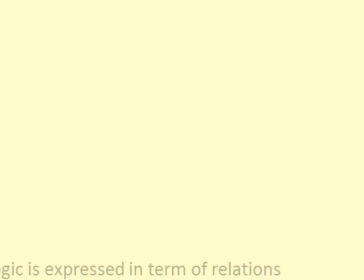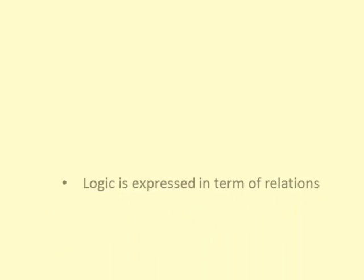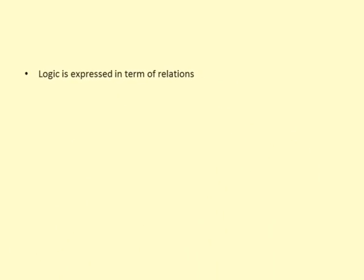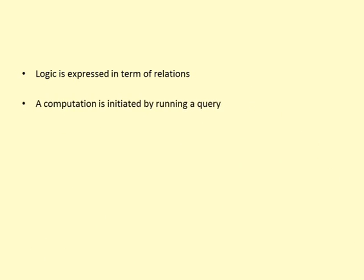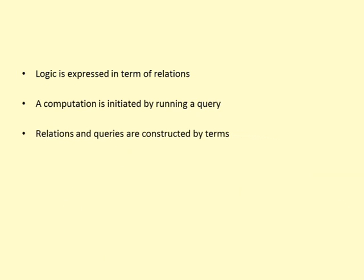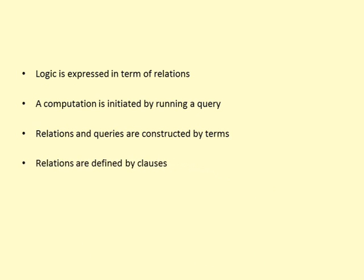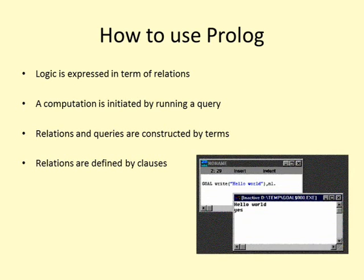In Prolog, program logic is expressed in terms of relations, and a computation is initiated by running a query over these relations. Relations and queries are constructed using terms, which is Prolog's single data type. Relations are defined by clauses, and when you give a query, Prolog attempts to find if the query is true or false.